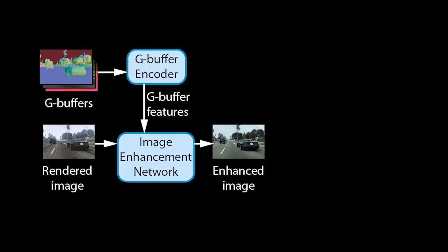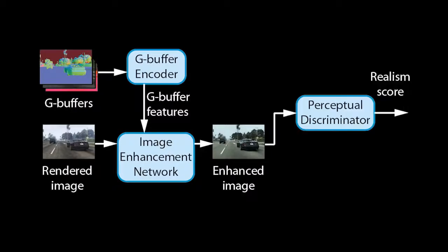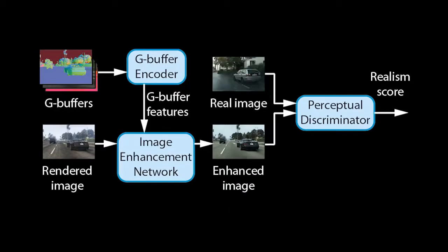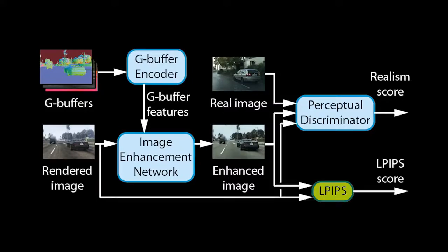To train our networks for enhancing realism, we employ a perceptual discriminator. For each image it takes in, it produces a realism score. To make it understand what the real world looks like, we also feed it real photos. To ensure that our networks retain the structure of rendered images, we further add them to the discriminator inputs and employ a perceptual loss.